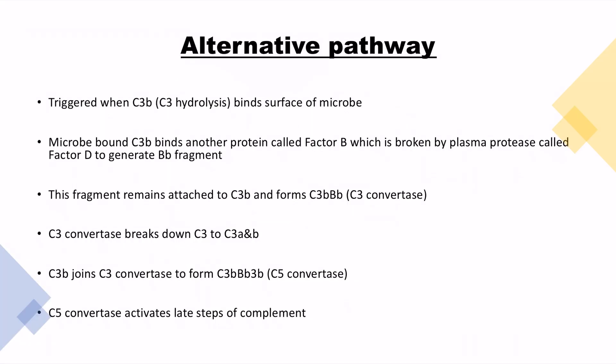The microbe bound C3B binds another protein called factor B which is broken by plasma protease called factor D to generate Bb fragment. This fragment remains attached to C3B and forms C3 convertase. C3 convertase will make C5 convertase and then C5 activates the late steps of complement.